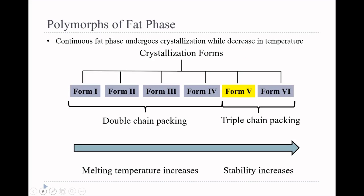The continuous fat phase is known to have different crystallization forms, or polymorphs. Typically six types of polymorphs are known for the fat phase. Forms 1 to 4 have double chain packing, while forms 5 and 6 have triple chain packing. When you cool chocolate from high temperature, form 1 gets formed, which as a function of time changes to forms 2, 3, and 4. Careful tempering is required to obtain form 5, which over time also gets converted into form 6. Form 5 is considered the most desired form for that specific mouth feel and taste.